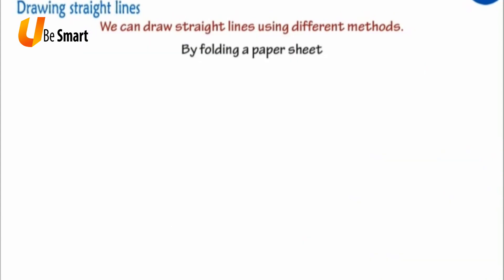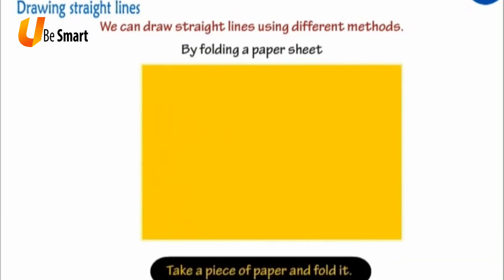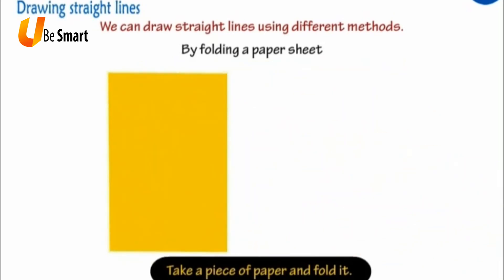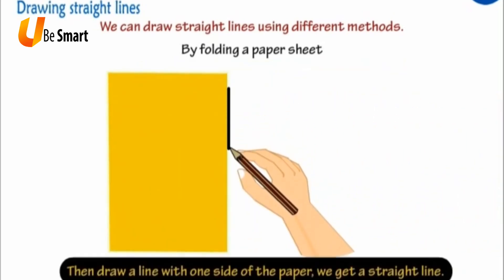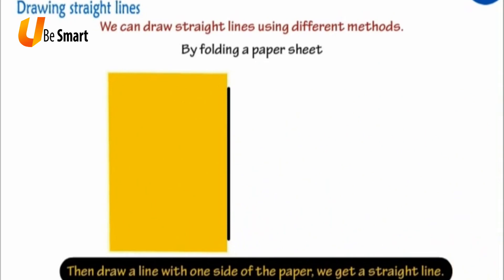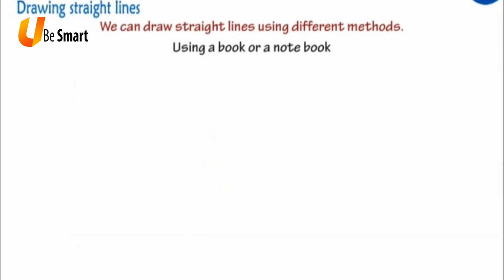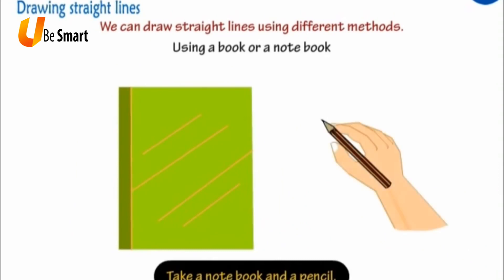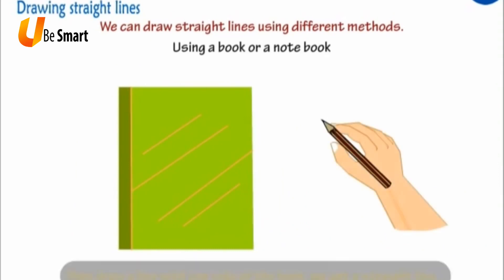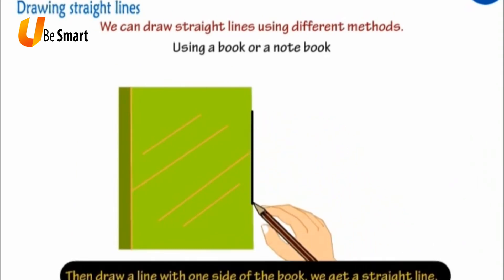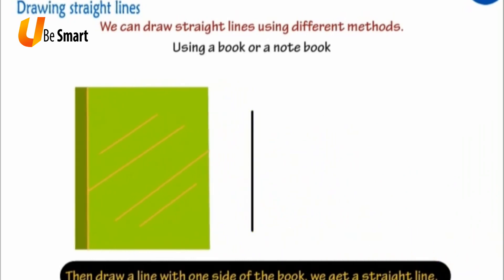By folding a paper sheet: Take a piece of paper and fold it. Then, draw a line with one side of the paper. We get a straight line. Using a book or a notebook: Take a notebook and a pencil. Then, draw a line with one side of the book. We get a straight line.